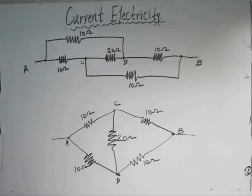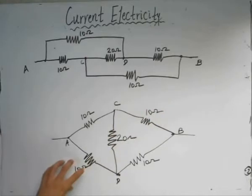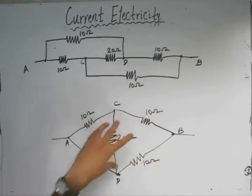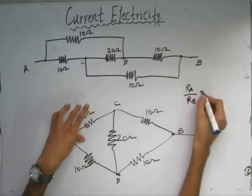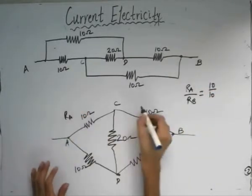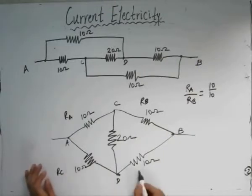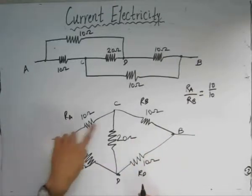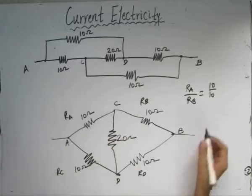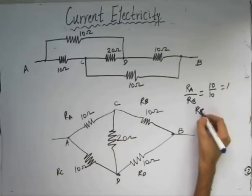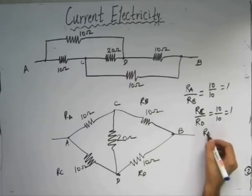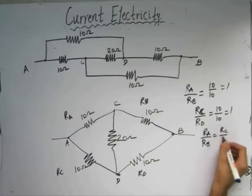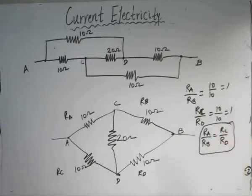This follows the Wheatstone Bridge circuit diagram. We identify Ra, Rb, Rc, Rd, and the diagonal branch resistance. The value of Ra is 10 ohms, Rb is 10 ohms, Rc is 10 ohms, and Rd is 10 ohms. The ratio Ra/Rb equals 10/10, and Rc/Rd equals 10/10. Both ratios are the same, meaning Ra/Rb = Rc/Rd. This is the condition for the Wheatstone network.